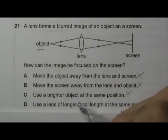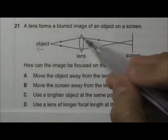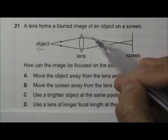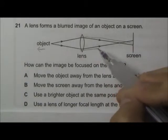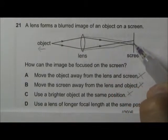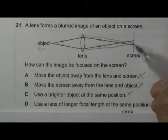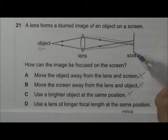Okay, using a lens of a longer focal length at the same position, that means the light ray will converge at a later time. Something like this. So this will help the light ray to intersect at the position of the screen. Okay, so D is the correct answer.